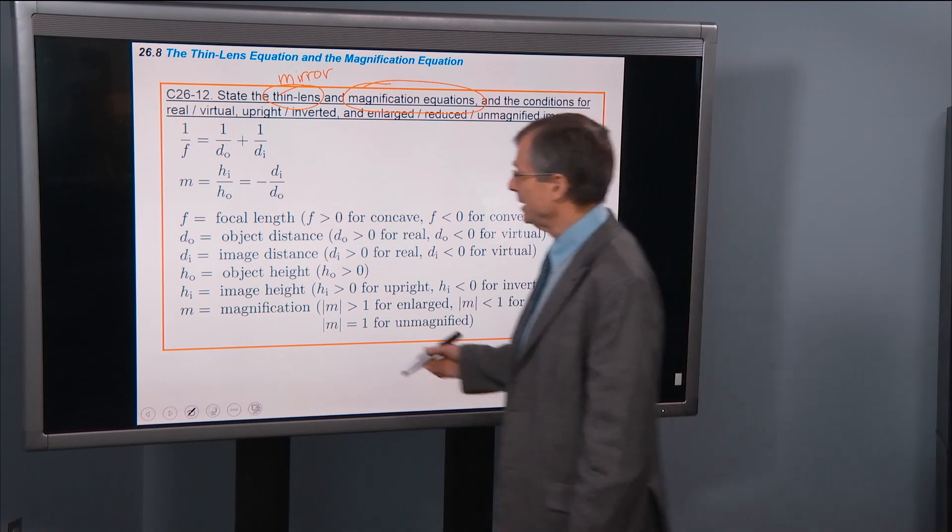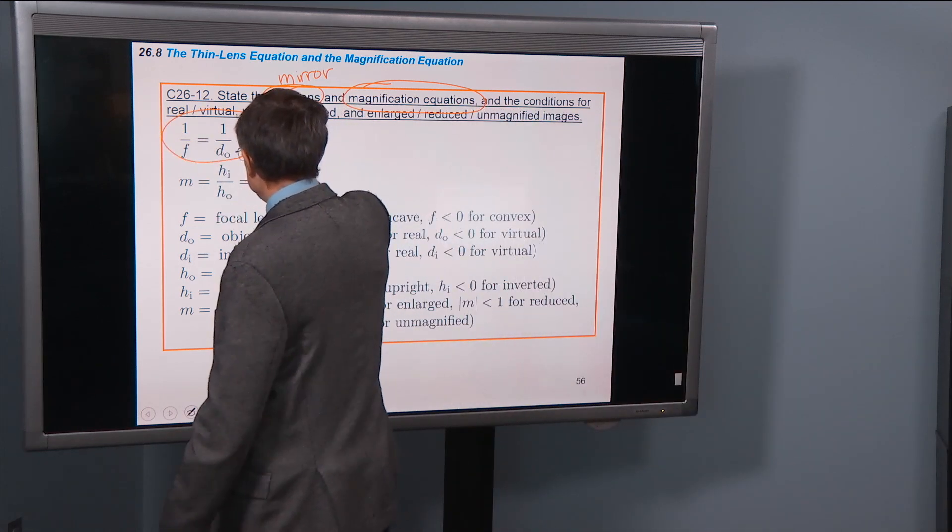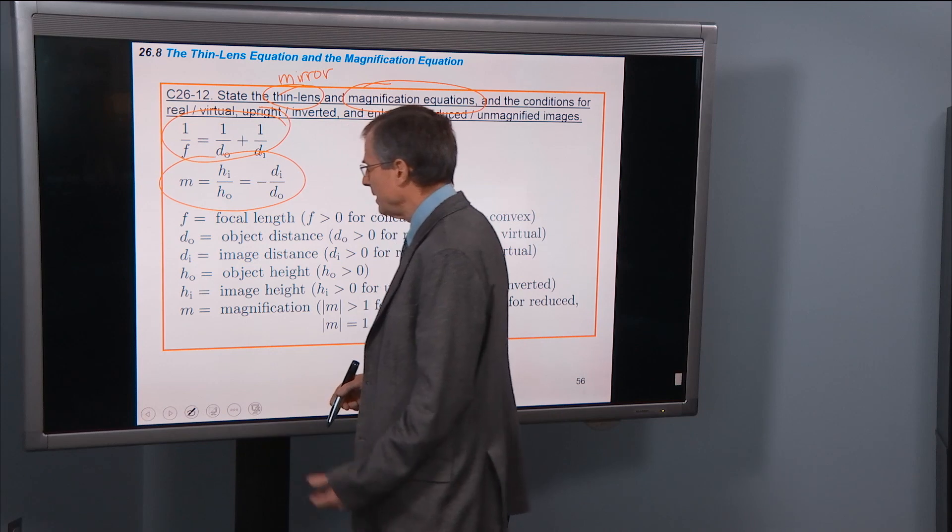But this is called the thin lens equation. This is called the magnification equation. Everything has the same meaning as before.